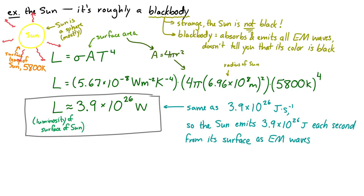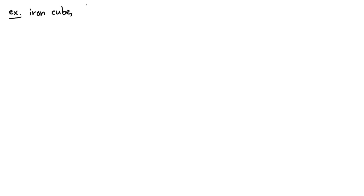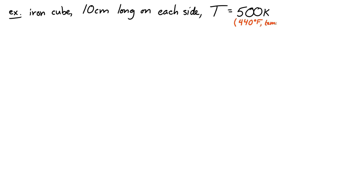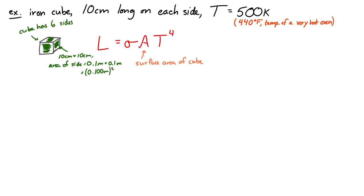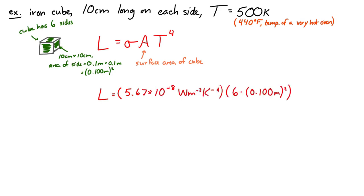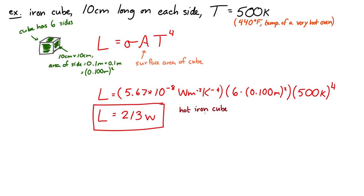Let's look at a different situation. Imagine we have a little iron cube, 10 centimeters on a side, at a temperature of 500 Kelvin — that's about 440 degrees Fahrenheit, like a really, really hot oven. For the luminosity: we use the Stefan-Boltzmann constant, and the surface area of a cube. One side is 0.1 meters squared, and there are 6 sides, so we use 6 times 0.1 squared. Then times 500 Kelvin to the fourth power. The luminosity comes out to 213 watts. So that iron cube at 500 Kelvin gives off 213 watts.